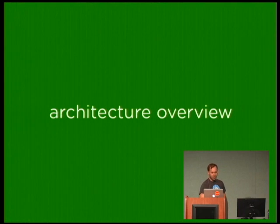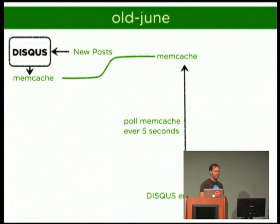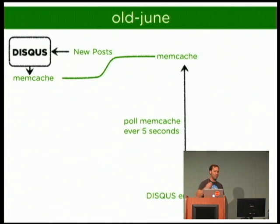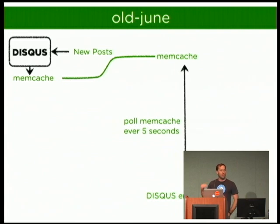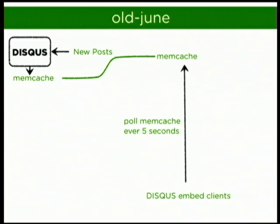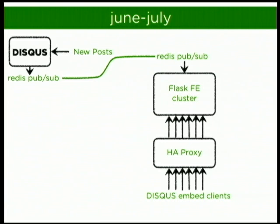Here's a quick architecture overview. The old real-time system: Django would post to memcache on a key, and the front-end client would poll that key every couple of seconds, displaying new items in the client. This was not good — it did not scale at all; only about 10% of our network could actually use the product.